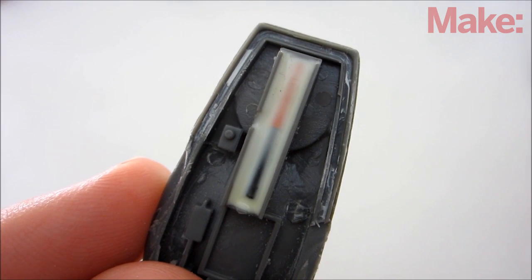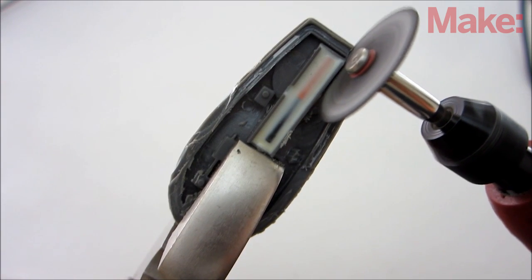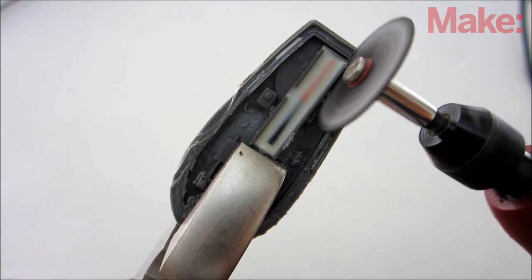Next, you need to remove the RFID chip. I decided that the safest way to remove the chip was to slowly cut it out with a rotary tool.